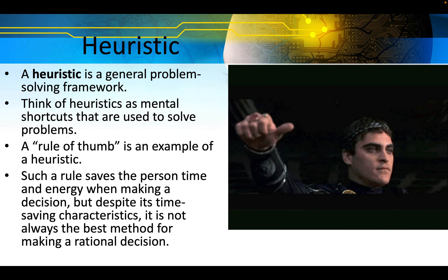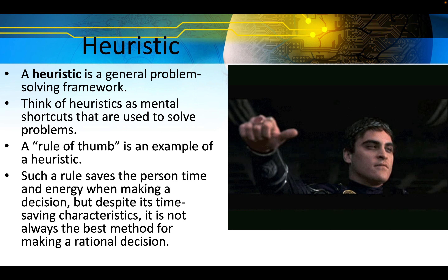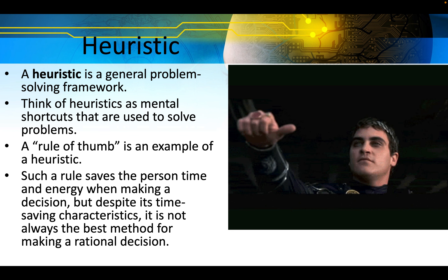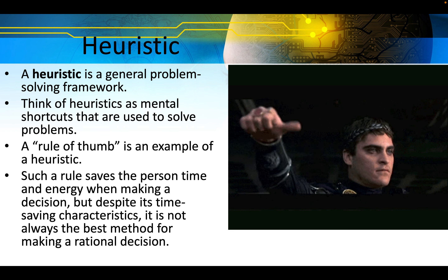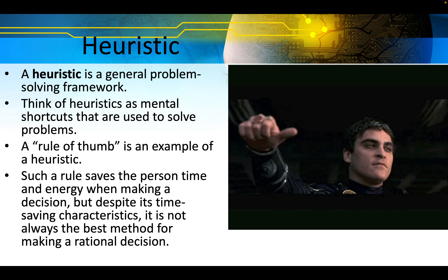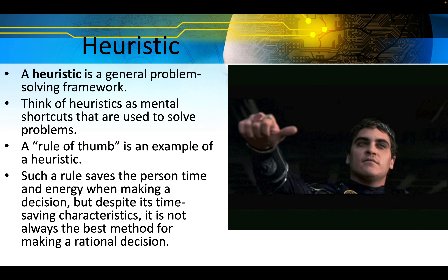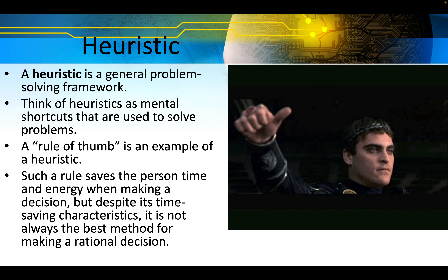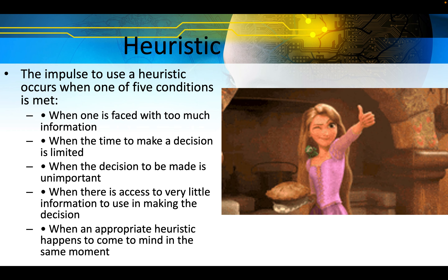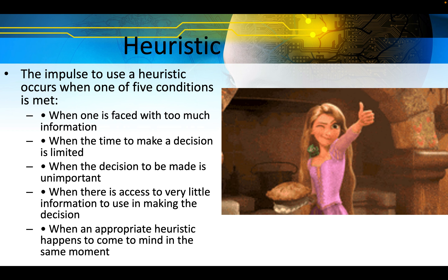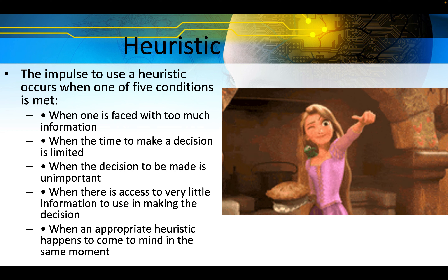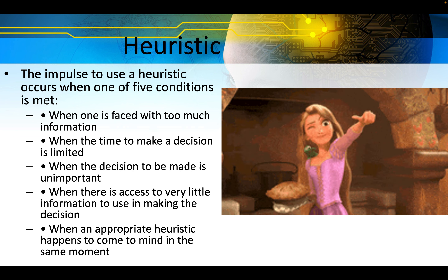A heuristic is a general problem-solving framework — think of heuristics as mental shortcuts used to solve problems. A rule of thumb is an example of a heuristic — it saves the person time and energy when making a decision, but it is not always the best method for making a rational decision. The impulse to use a heuristic occurs when one is faced with too much information, when the time to make a decision is limited, when the decision is unimportant, when there is very little information available, or when an appropriate heuristic comes to mind in the moment.